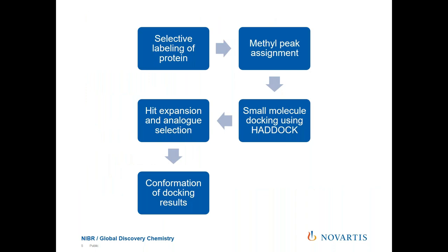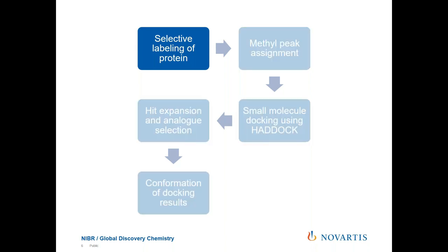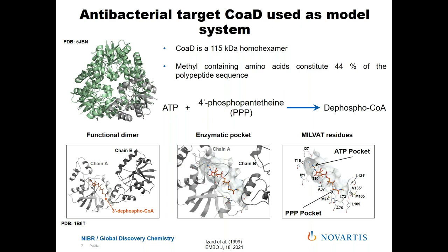This is the workflow I'm going to go through in my presentation, and I'll address each step as they are all important parts in being able to generate the end result. The first thing I'll talk about is the selective labeling of your protein of interest. When working with small soluble targets, uniform carbon or nitrogen labeling is often sufficient, but as your target gets larger — in the 20 to 30 kDa range — you need to think about deuteration, and for even larger targets, selective labeling of side chains.